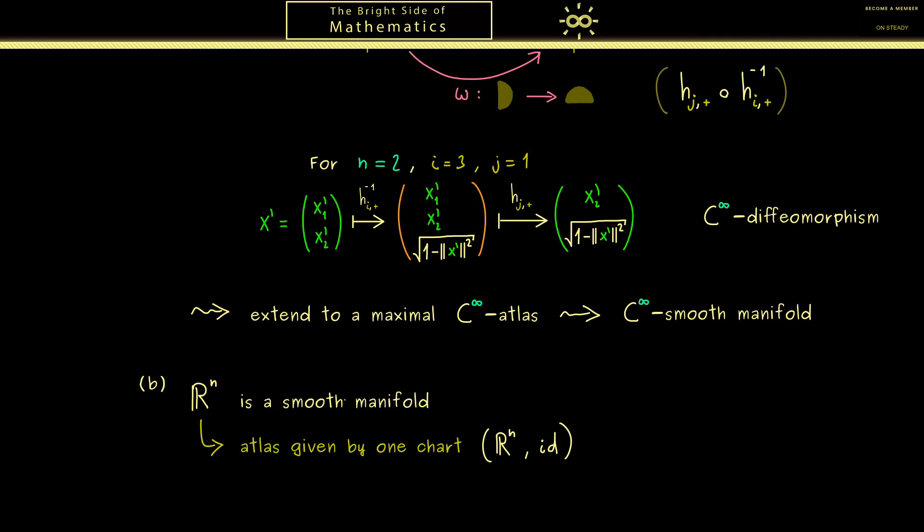And then as before, this atlas can be extended to a maximal C^∞ atlas. And there you should see just by starting with one chart we immediately get a whole C^∞ smooth structure for this manifold. In fact, this is what we call the standard smooth structure for R^n. Of course, there could be also other smooth structures for R^n, but usually when we say that R^n is a smooth manifold we mean this standard smooth structure for R^n.